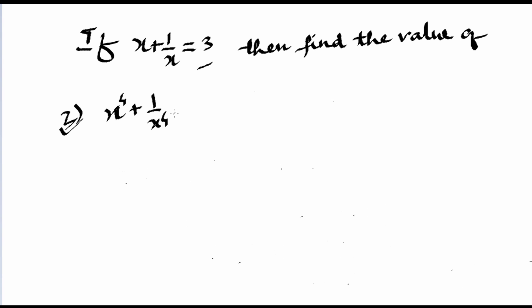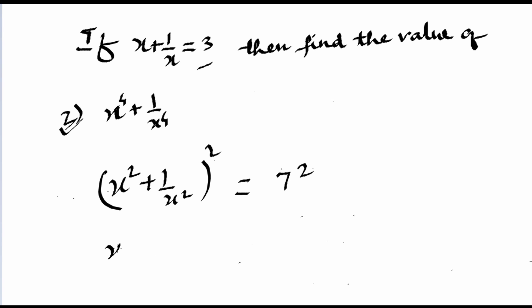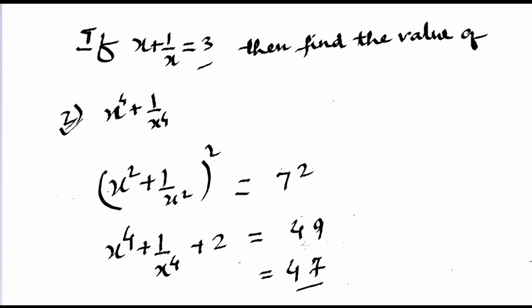For the third problem, x to the power 4 plus 1 by x to the power 4, we will square the result of x square plus 1 by x square. We have already found x² + 1/x² = 7, so we square that: 7² = 49. Squaring gives x⁴ + 1/x⁴ + 2 = 49, and the 2ab term cancels to just 2. So x to the power 4 plus 1 by x to the power 4 equals 49 minus 2, which is 47.